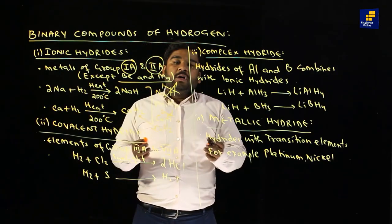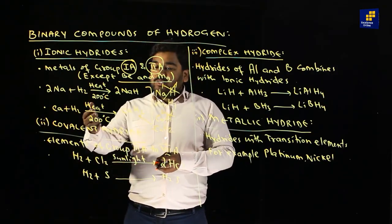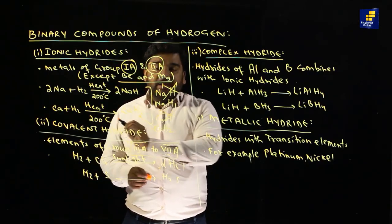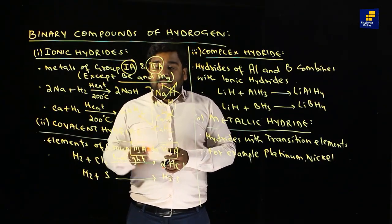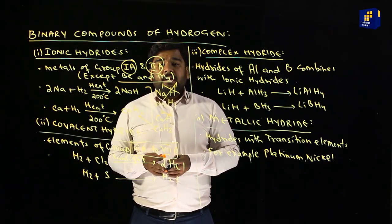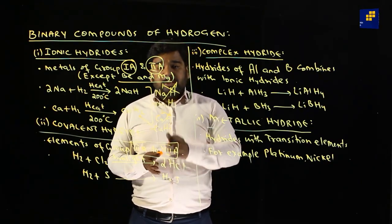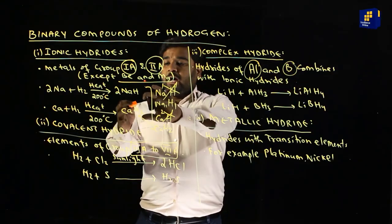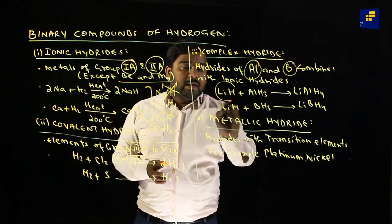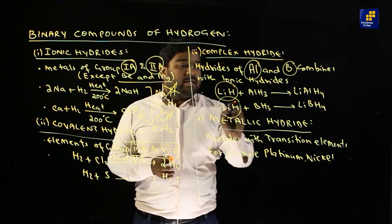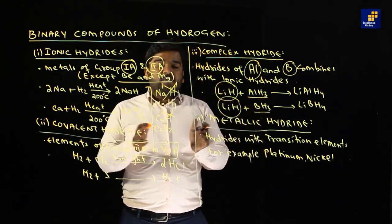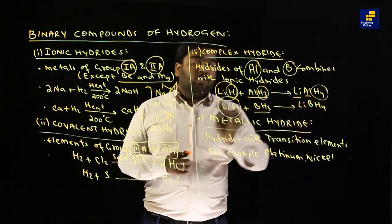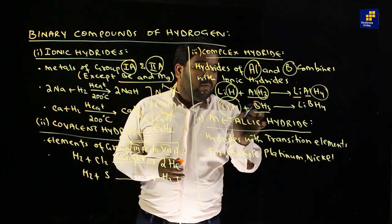Second type है: covalent hydride — यह covalent bond form करते हैं group 3 से लेकर group 7 तक; group 8A कोई bond form नहीं करता। यहाँ पर aluminium और boron की exception है — aluminium और boron stable compounds नहीं बनाते, इसलिए उन्हें complex hydrides बनाने होते हैं। Complex hydrides में boron और aluminium के hydrides, ionic hydrides के साथ combine हो जाते हैं — जैसे lithium aluminium hydride (LiAlH₄) और lithium borohydride (LiBH₄)।